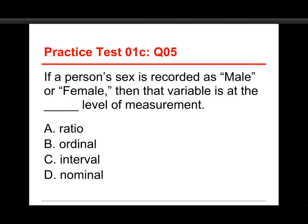To hammer that home, here's the third version: Number five, if a person's sex is recorded as the word Male or the word Female, then that variable is at the blank level of measurement. The choices are Nominal, Ordinal, Interval, Ratio. Just like the other two, the answer is still Nominal. It is a category name. The other ones used numbers to indicate categories; this one uses the words themselves. But the way we label it is irrelevant — we are still dealing with categories. And that's one of the big morals to take from this.